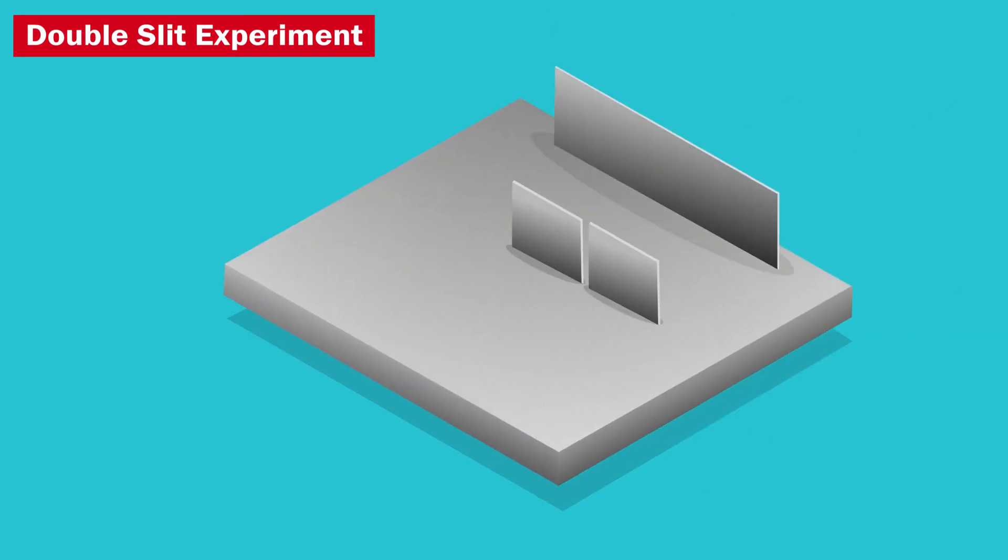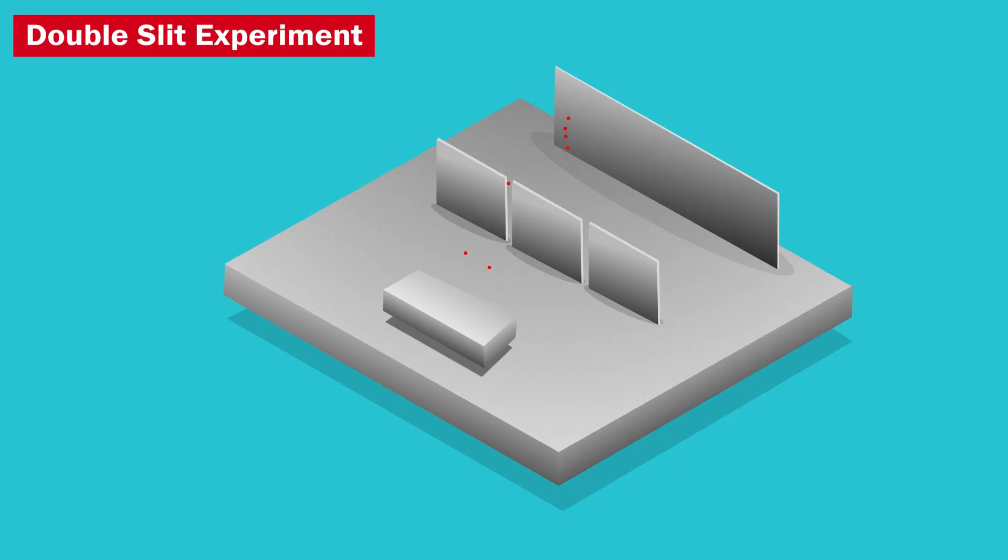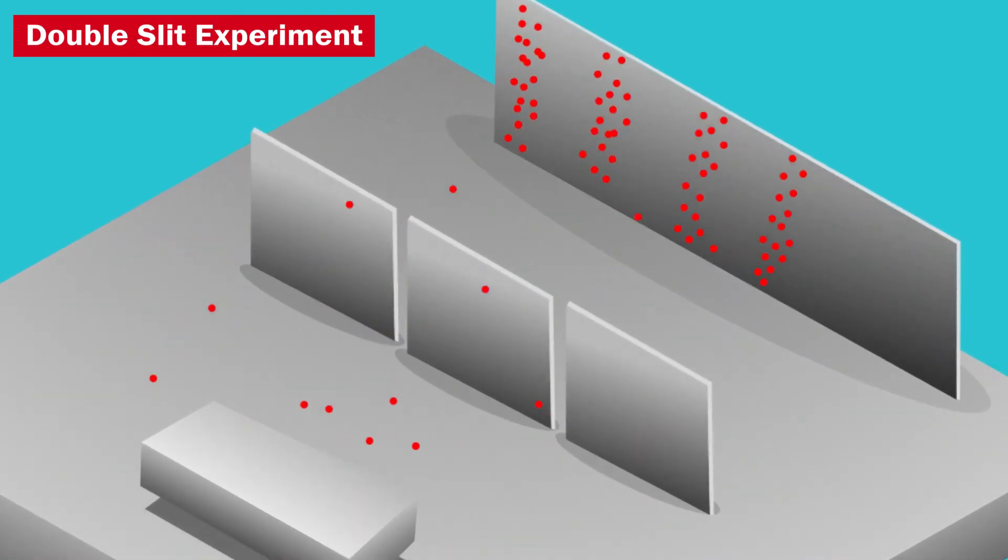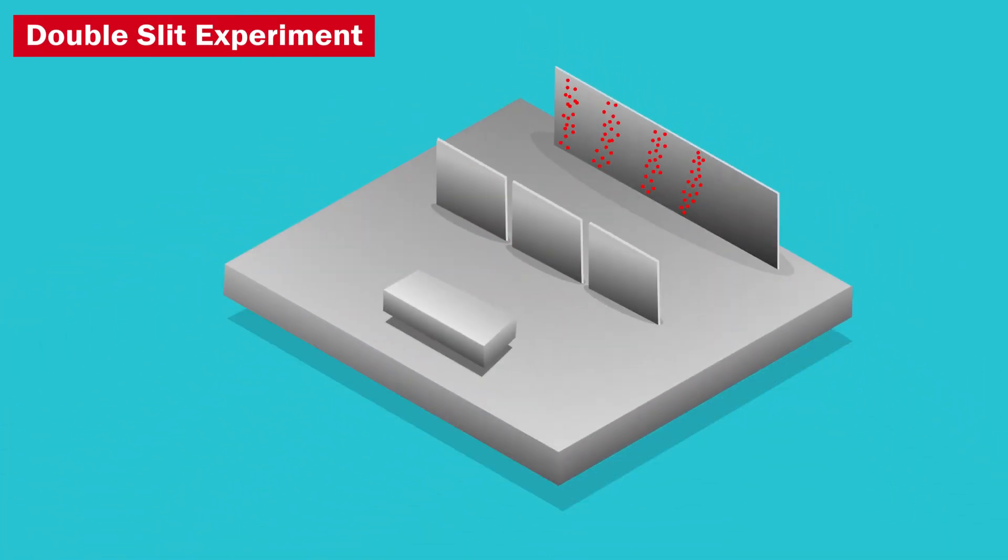If we repeat the experiment multiple times, we see an interference pattern in the detector. Classical probability theory cannot explain the interference pattern.